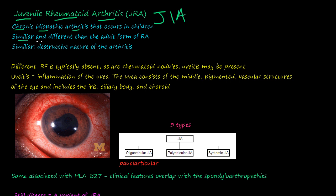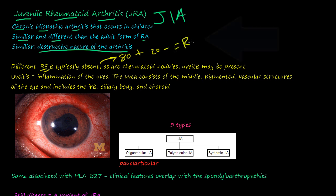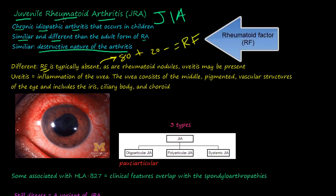There are similarities and differences from adult RA. What's similar is the destructive nature of joints, as in rheumatoid arthritis — you can watch the last video on that. But the destructive nature of joints happens in the juvenile form too. What's different is that RF is typically absent. In adult RA, it was 80% positive and 20% negative for RF factor, but in the juvenile form, JRA, it's typically absent.